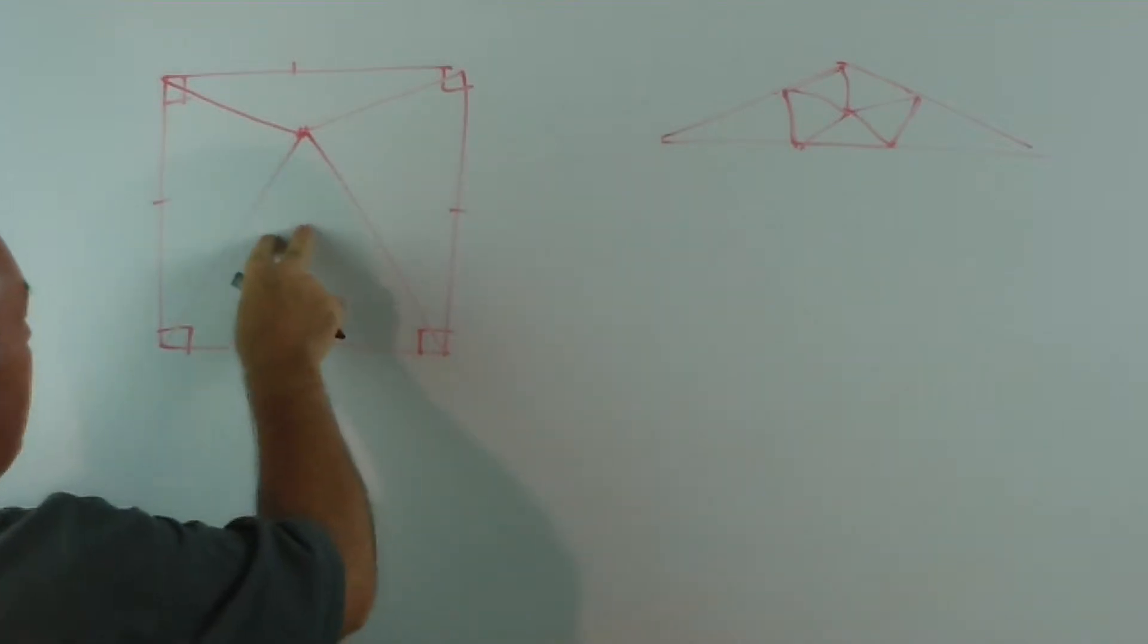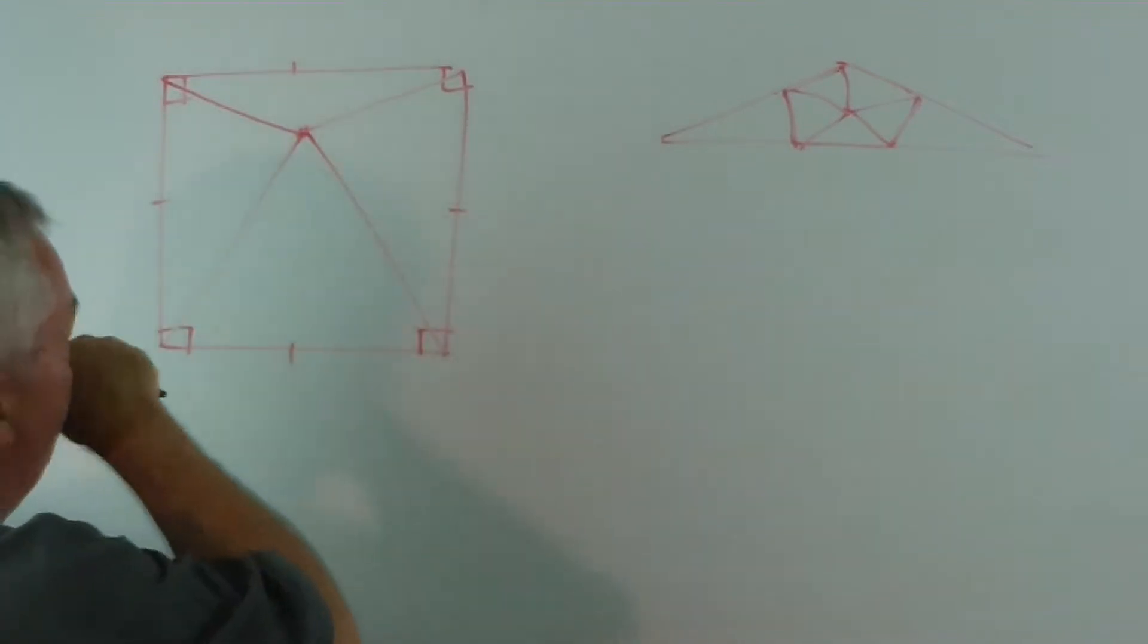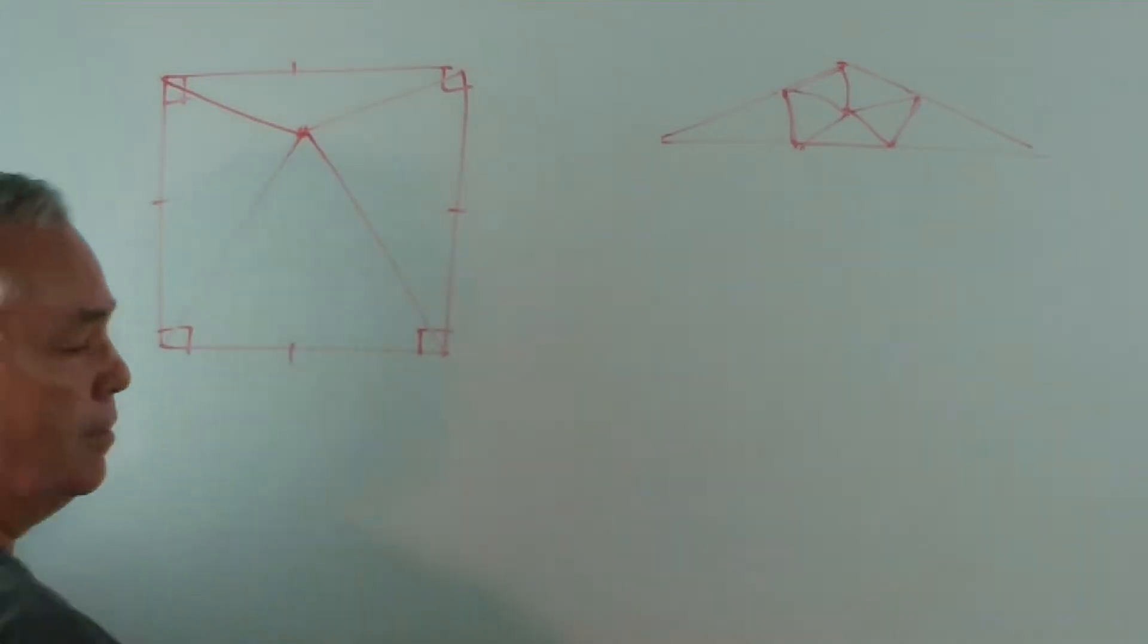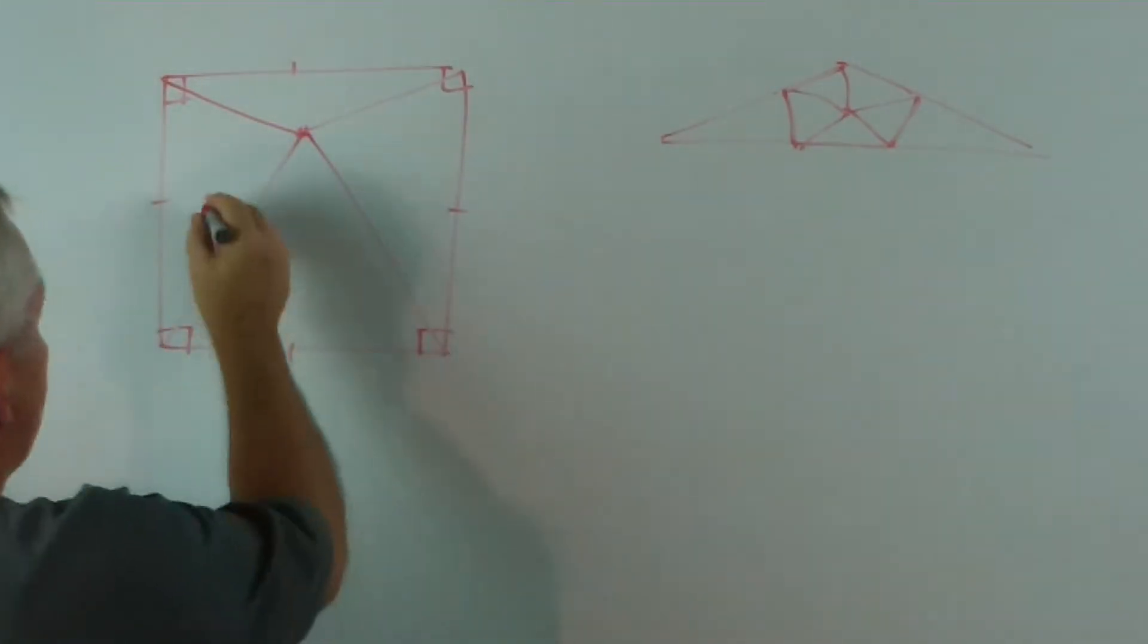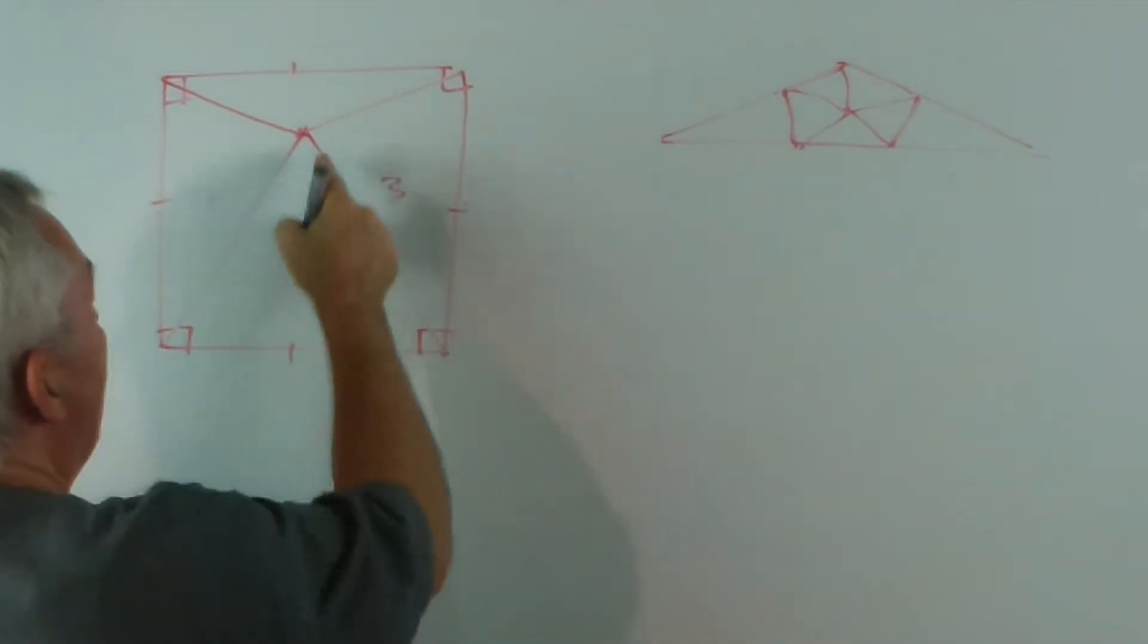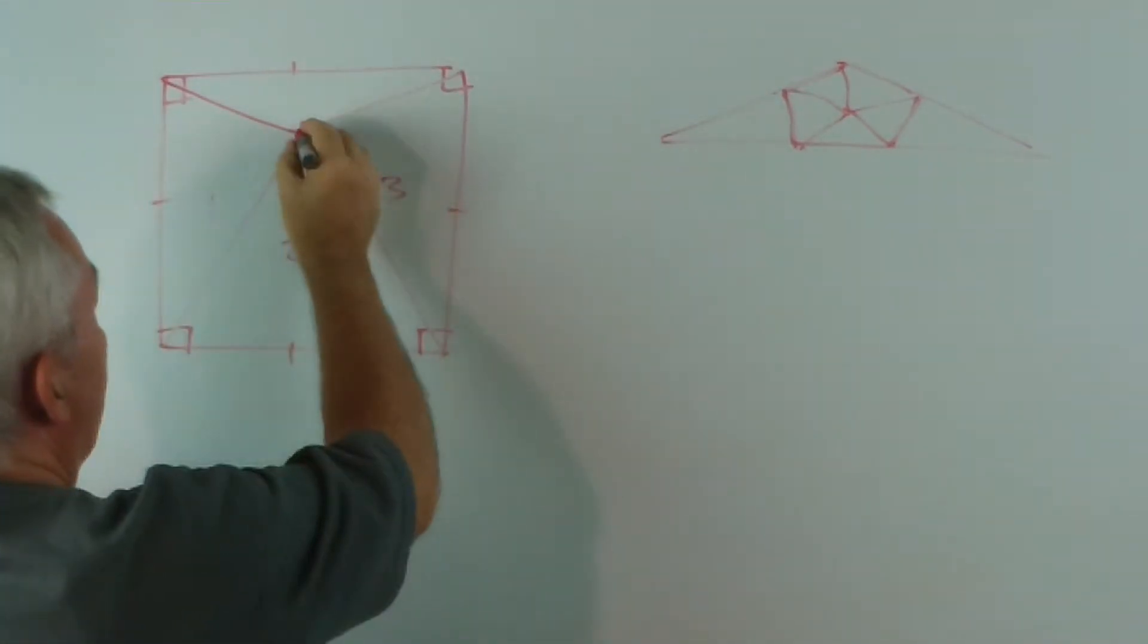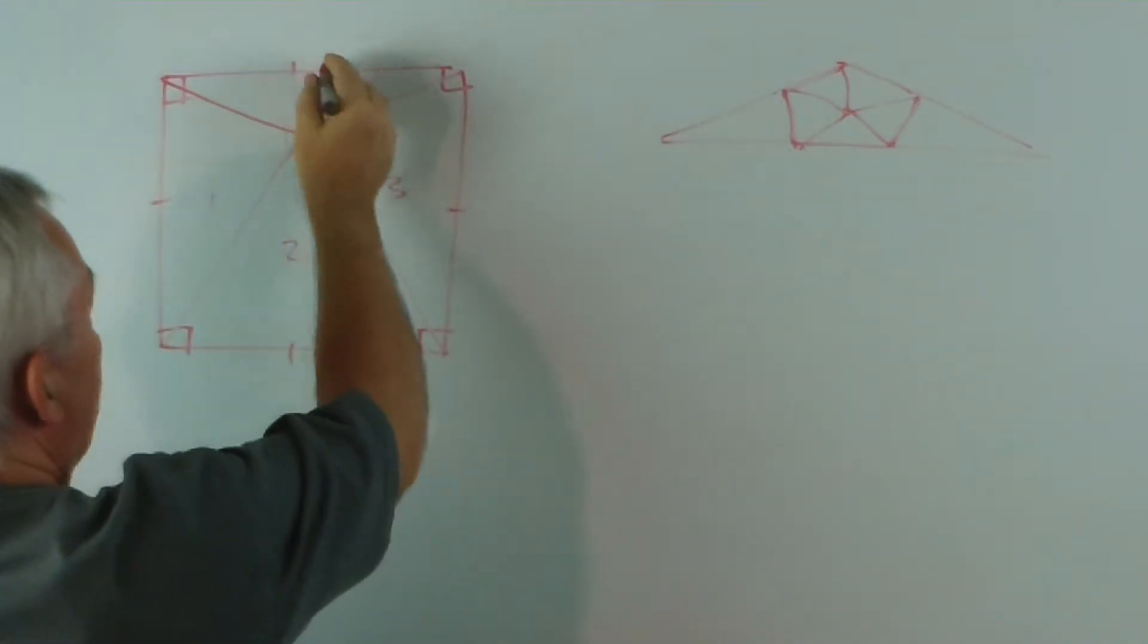These three triangles are going to be acute angle triangles. This one has an obtuse angle, so there's one, two, three.